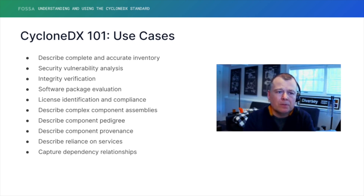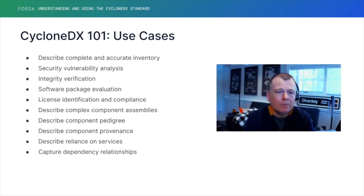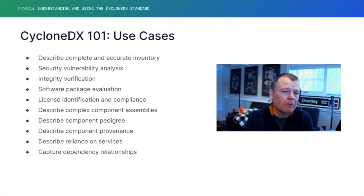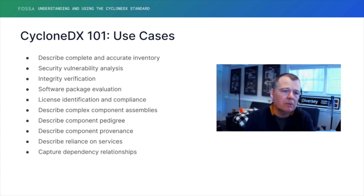One of the things especially relevant for open source is the sheer number of open source packages that exist. If software is eating the world, open source is eating software. A lot of that software is in the form of packages, most of them managed by package managers. With CycloneDX, you can evaluate those packages because you have enough data to tell you enough information about a package so that you can evaluate it properly.